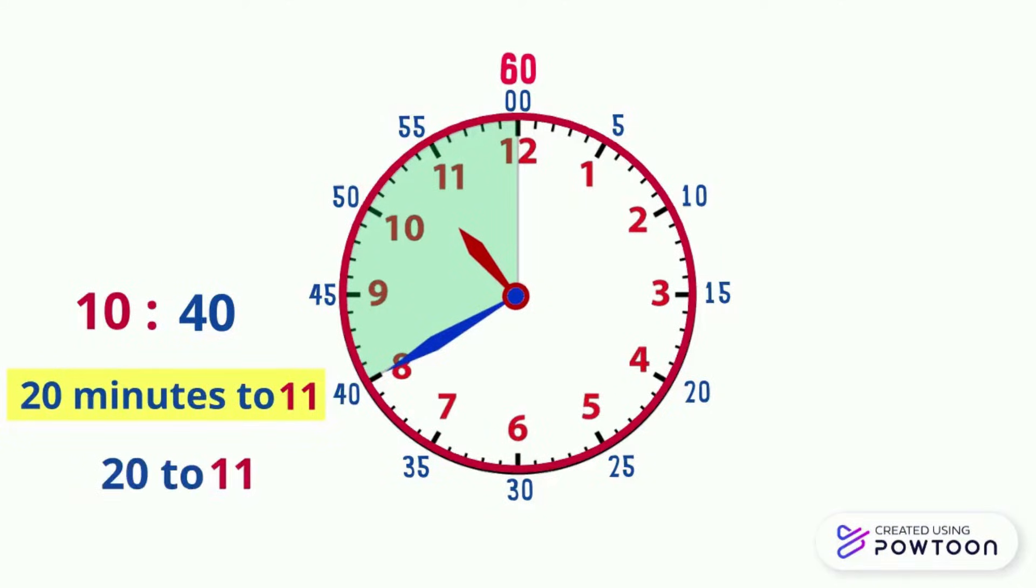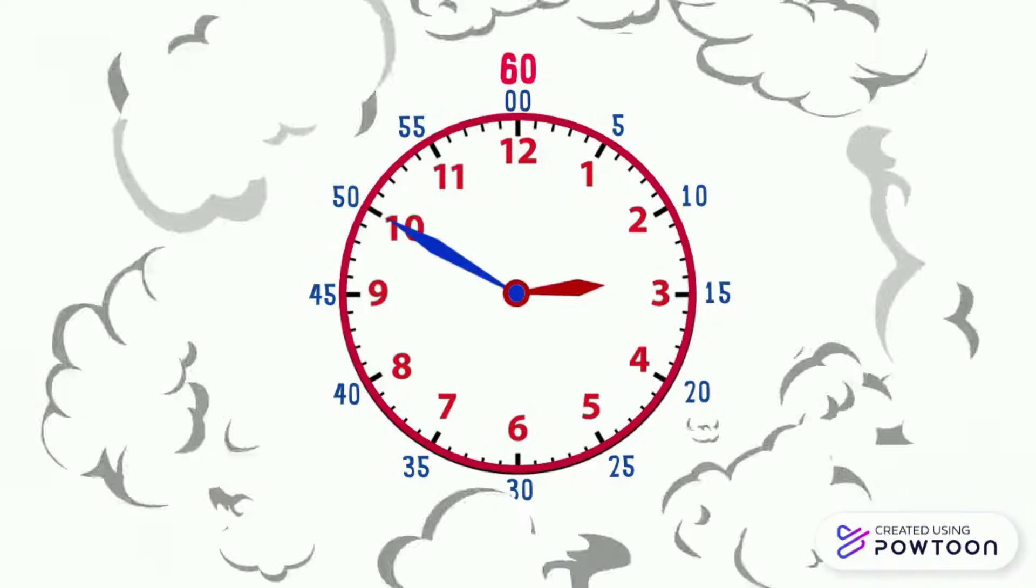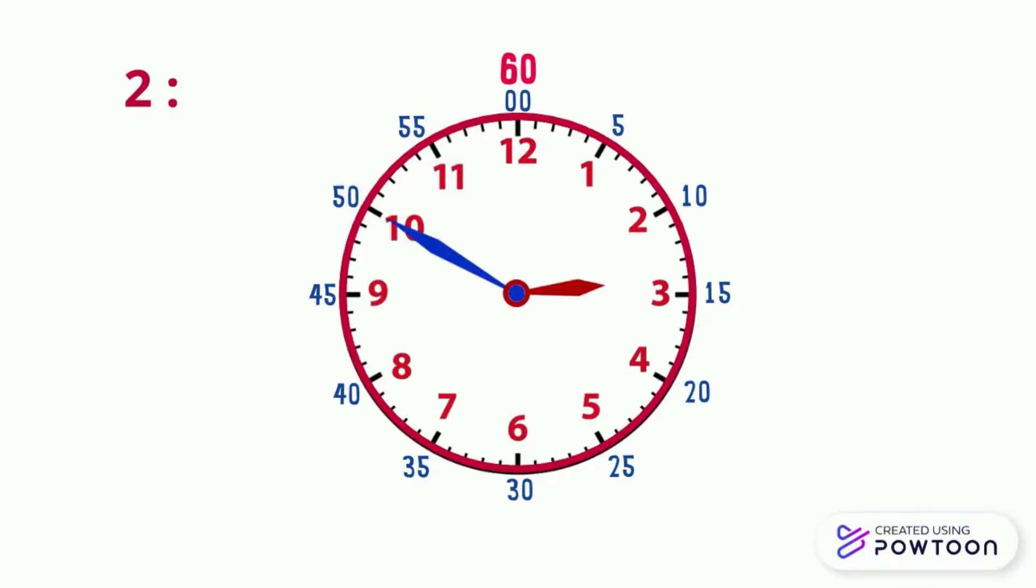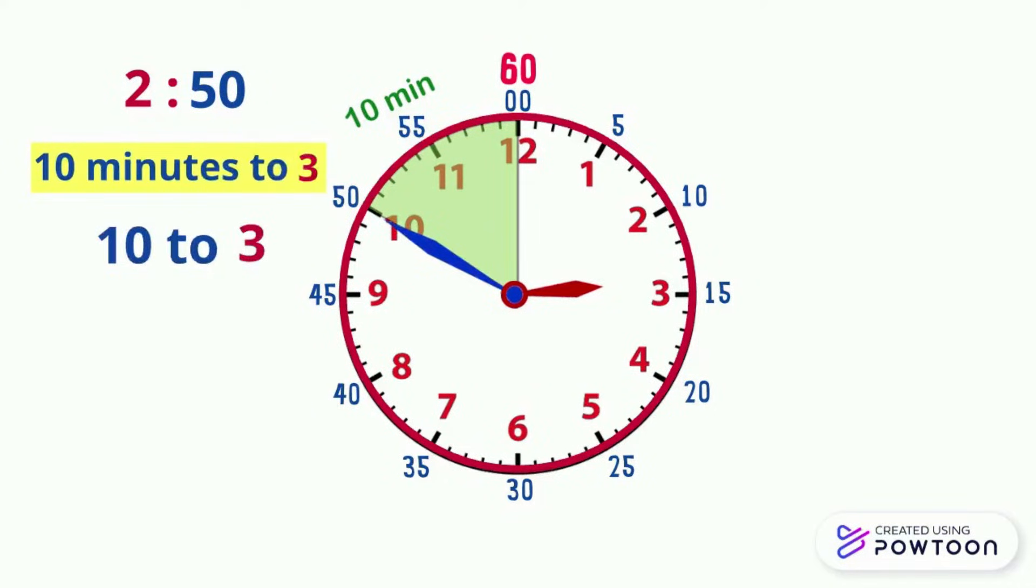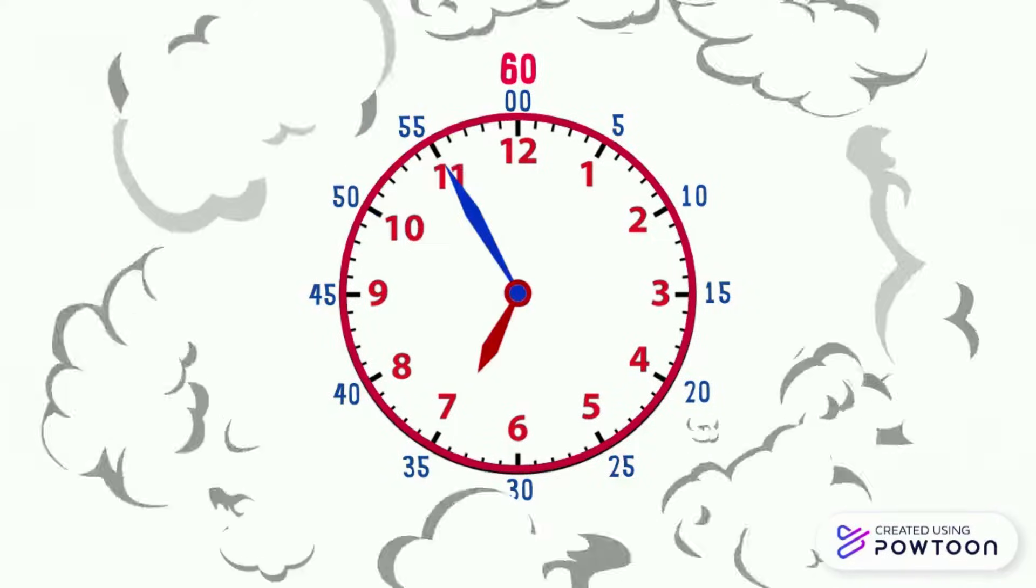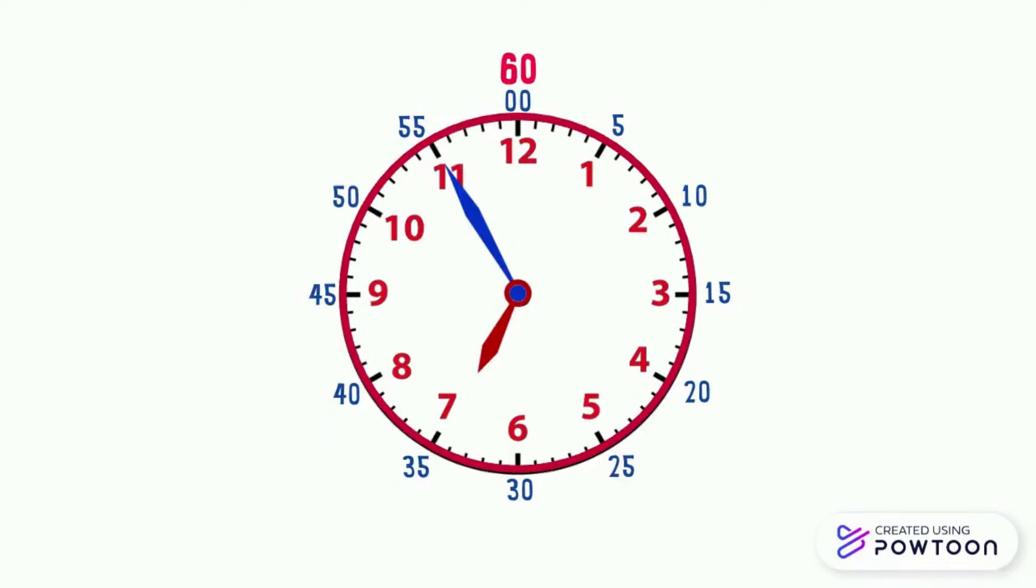Here it is 2:50, and there are 10 minutes left to be 3 o'clock, so it's 10 minutes to 3, or we can say 10 to 3. So we should figure out how many minutes the minute hand needs to move to the next whole hour.